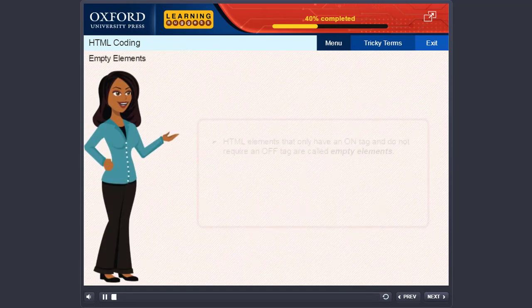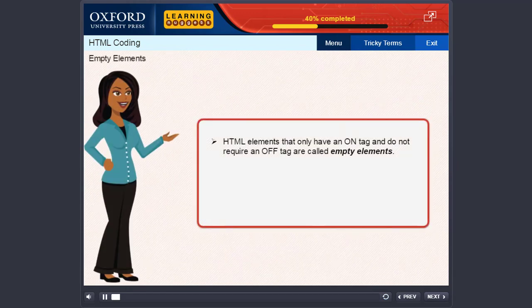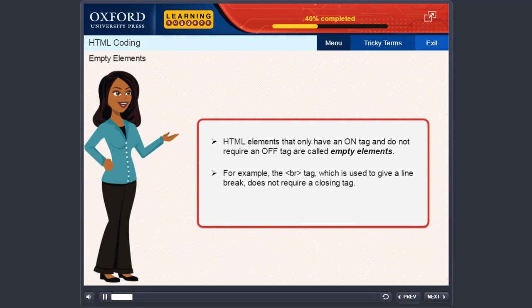Empty elements. HTML elements that have only an on tag and do not require an off tag are called empty elements. For example, the BR tag which is used to give a line break does not require a closing tag. Another example is the horizontal rule tag, HR.